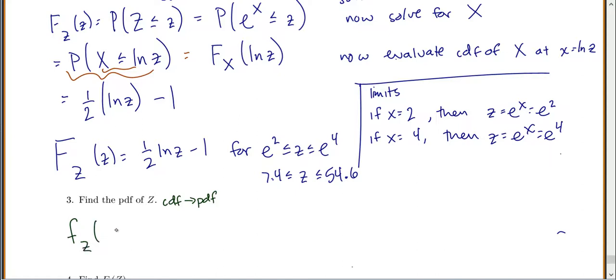So the PDF is equal to the derivative of the CDF. So in our case, it will be the derivative of our 1/2 natural log of z minus 1.